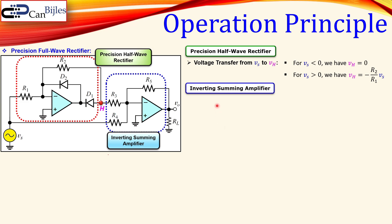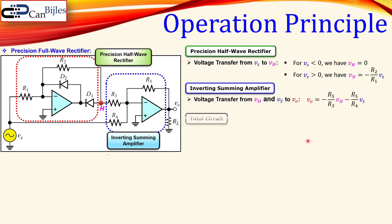For the inverting summing amplifier, from previous discussions about operational amplifier circuits, we have two inputs: H and also VS. We can now add them together such that VO equals minus R5 over R3 times VH — that's the first part — and then minus R5 over R4 times VS. This is important and we can use this later.